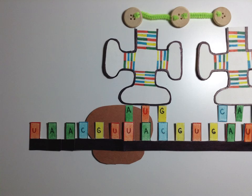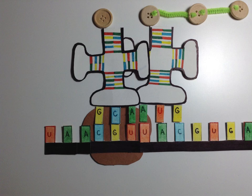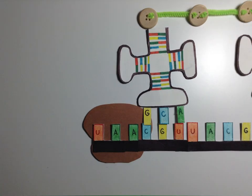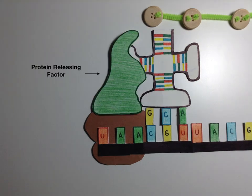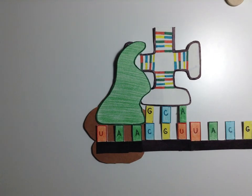Once the stop codon is reached, a release factor binds to the codon and causes a water molecule to be added to the end of the polypeptide. The chain separates from the last tRNA and the ribosome splits into its subunits.